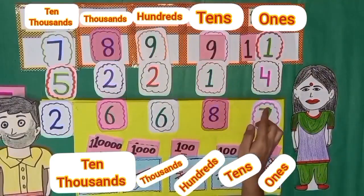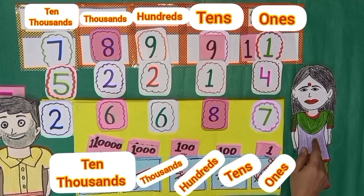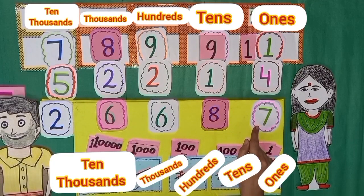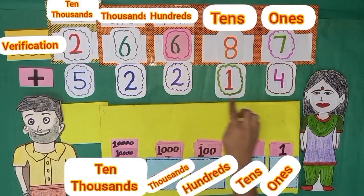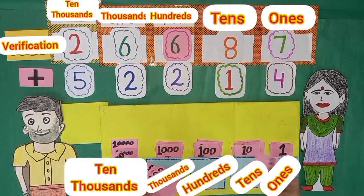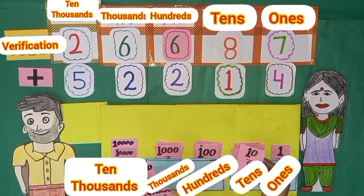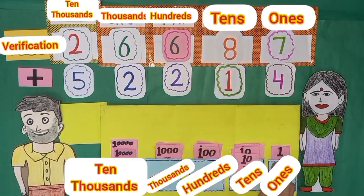Before giving the amount to the shopkeeper, Aman's mom wants to verify once again. So she will add the left amount and the spent amount to recheck. She already has 7 notes of 1s and by adding 4 more notes, she has 11 notes of 1. We will replace 10 notes of 1 with 1 note of 10s, because 10 ones is equal to 1 ten.